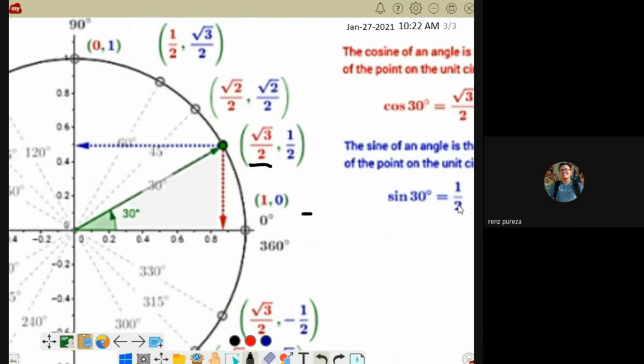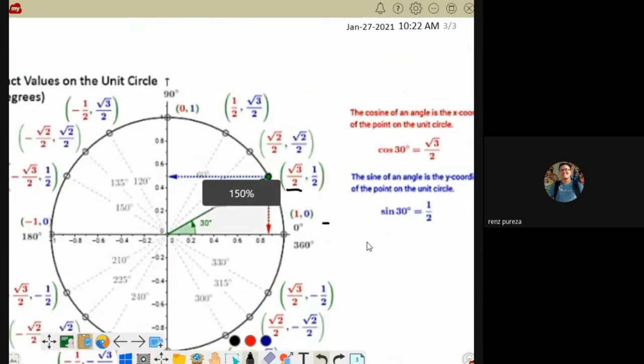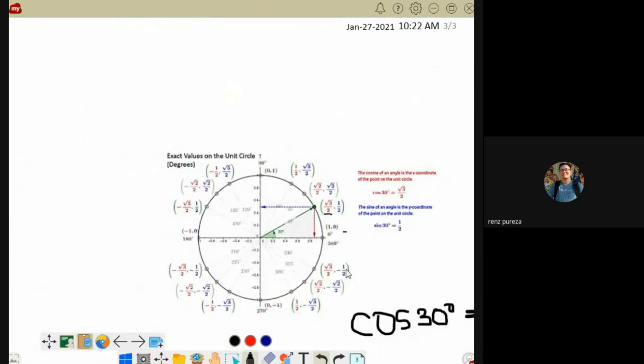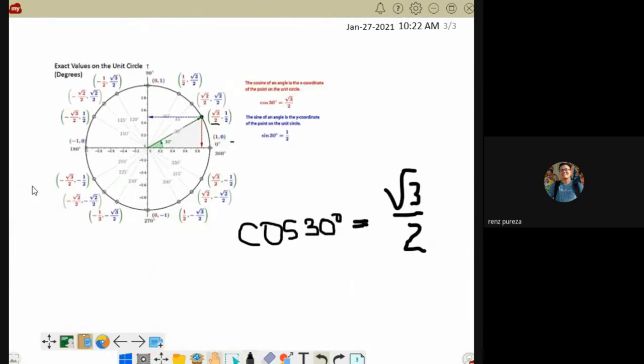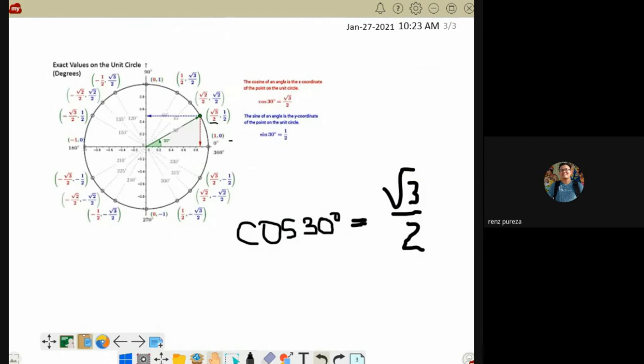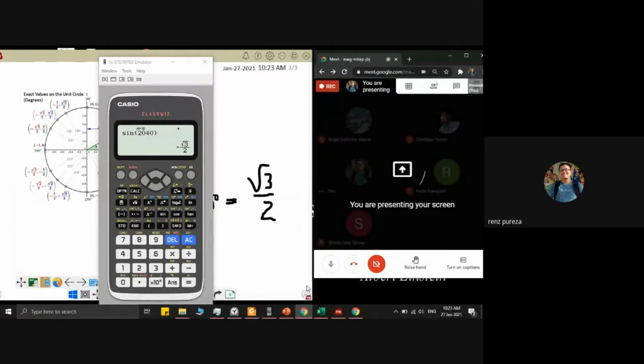Even without computing, square root of 3 angle 30, just point here. That is square root of 3 over 2. Same with sine 30 - if you compute sine 30, just look here at the second coordinate.